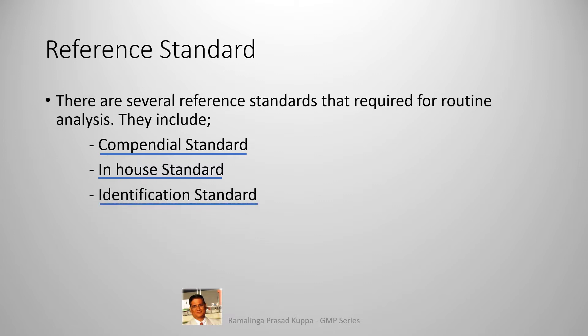Identification standard is generally used for identification purposes. To match the retention time of the compound, this standard is used. This standard may also have identified typical potential impurities that are generated in the process in significant amounts. This establishes the presence or absence of such typical impurities in the product. Identification standards may be of API or intermediate.